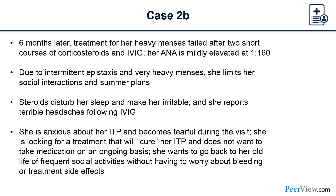Our second case — six months later — was treated for heavy menses, failed after two short courses of corticosteroids and IVIG. She has a mildly elevated ANA at 1:160, nosebleeds, heavy menses, and is limiting her social interactions and summer plans. Steroids disturb her sleep and make her irritable. She has terrible headaches following IVIG and is anxious about her ITP. She is looking for a treatment that will cure her, does not want to take medication ongoing, and wants to return to her old life without worrying about bleeding or treatment side effects.